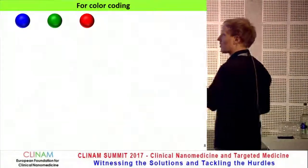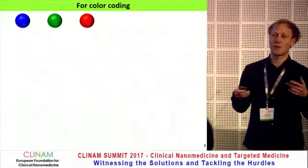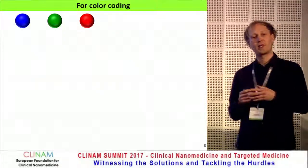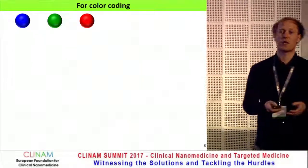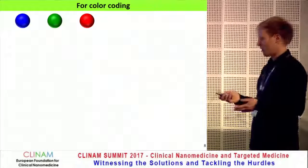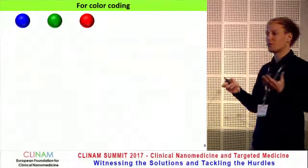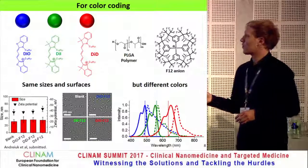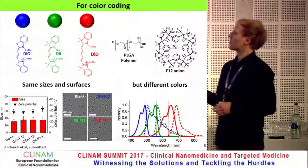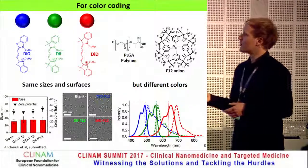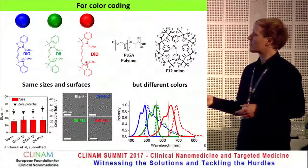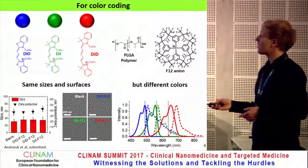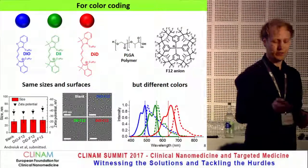For color coding we need at least three different colors. The idea is to make nanoparticles of different colors that are basically indistinguishable for cells — they should have very similar size and very similar surface properties, acting as a sort of neutral container. We achieved this using three different cyanine-based dyes encapsulated in PLGA, using still bulkier counter-ions. This gives us nanoparticles with basically the same size and very similar surface properties, but very distinct emission colors with absorbances that fit the major laser lines in confocal microscopy.